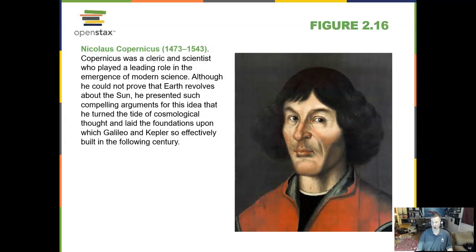Now this gentleman is very important. Nicholas Copernicus from 1473 to 1543. Copernicus was a scientist and a cleric who played a leading role in modern science coming out of Europe. He did not prove that the Earth revolved around the sun, but he presented compelling arguments for this idea.